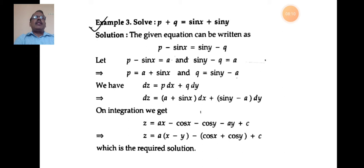We get dz = (a + sin x) dx + (sin y - a) dy. On integrating this variable separable equation, we have z = ax - cos x - cos y - ay + c, or z = a(x - y) - cos x + cos y + c. This is the required solution of the given differential equation.